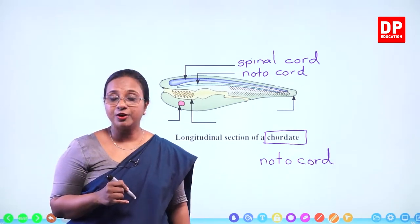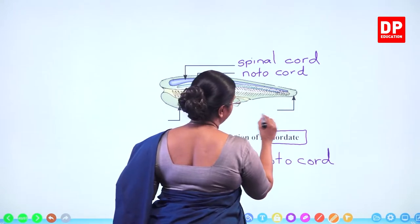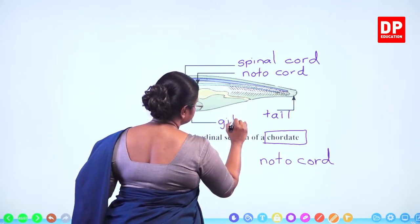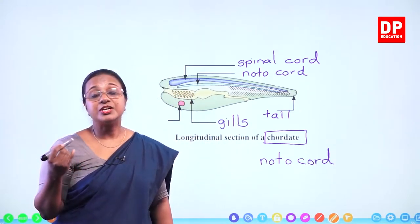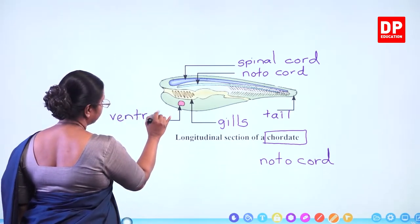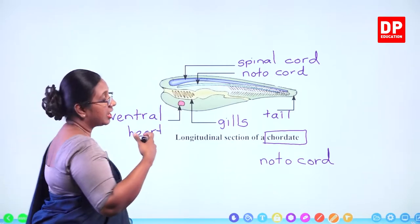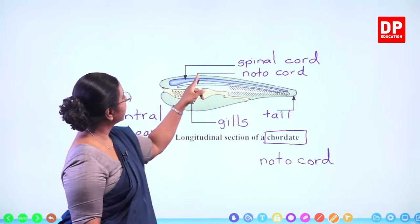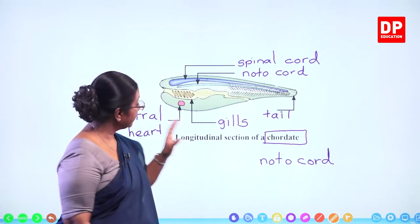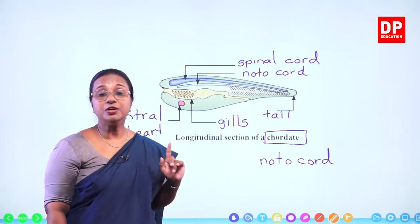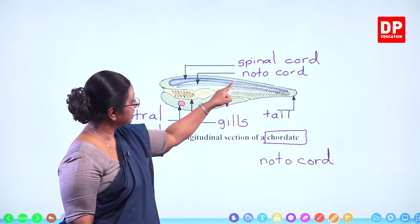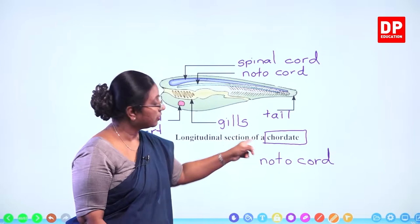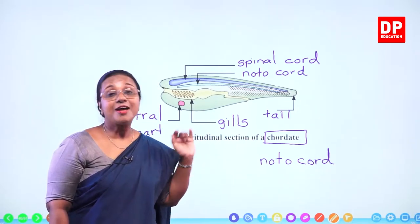There you have the tail part of the organism and the tail fin. Here we have the gills, and the pink structure is the ventral heart — so named because it is on the ventral side of the body. The parts you can identify from a longitudinal section of a chordate are: spinal cord, notochord, the tail, and the gills. Most importantly, understand the presence of the notochord. With that understanding, I will move on to the next slide.